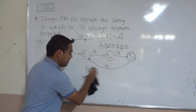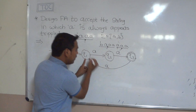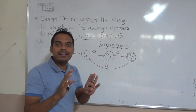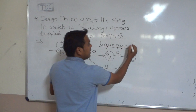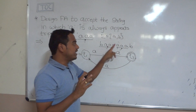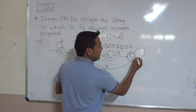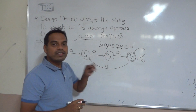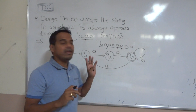So the correct transition is: at Q3 state, when A appears, it goes to Q1. This supports multiples of three: 3, 6, 9 A's are all accepted. Since we are not concerned with symbol B after three A's, whenever B appears at Q3 we keep a self-loop at Q3. Any string consisting of consecutive groups of three A's is accepted by this finite automata. This is the final deterministic finite automata — A always appears tripled.